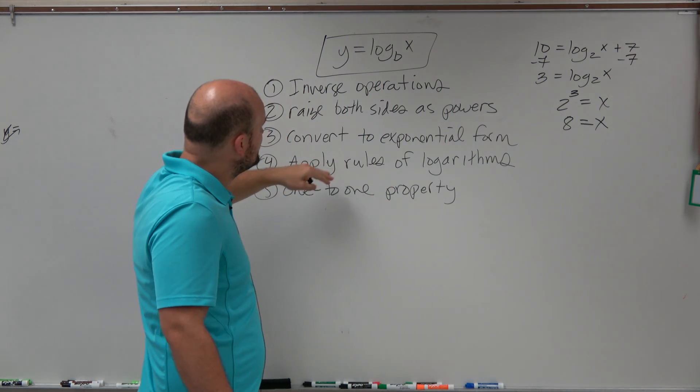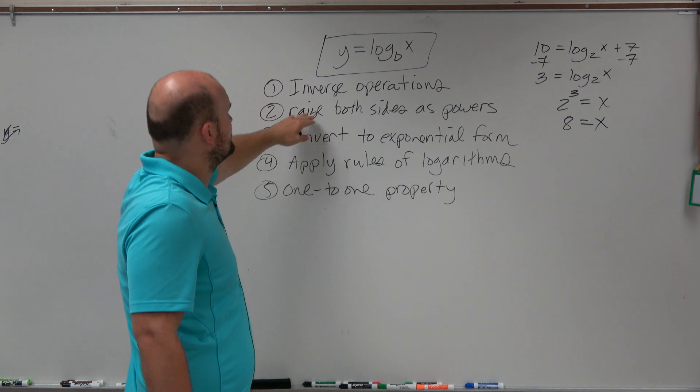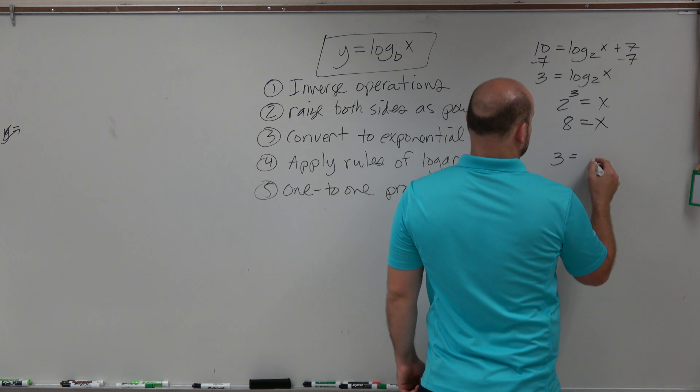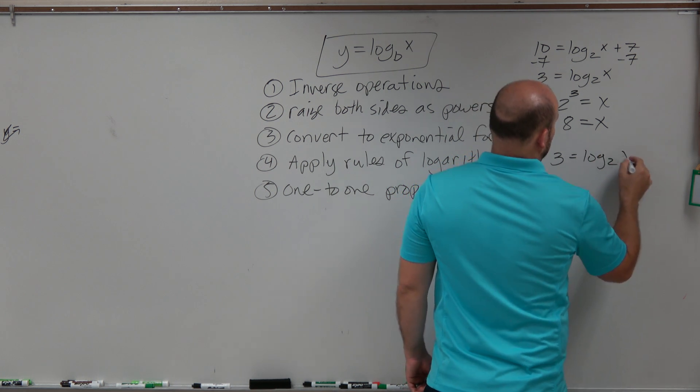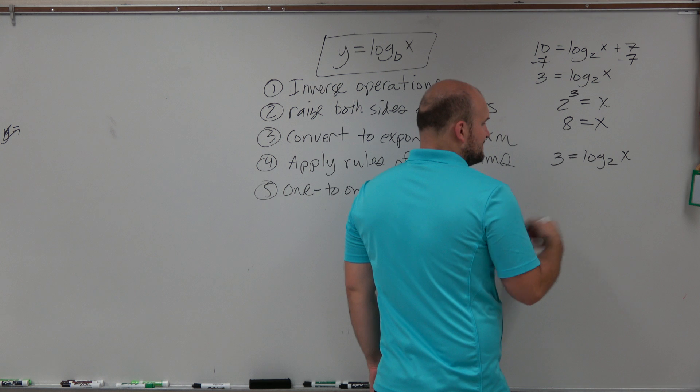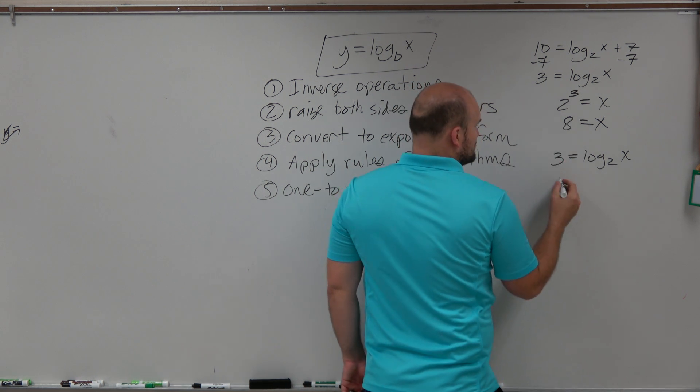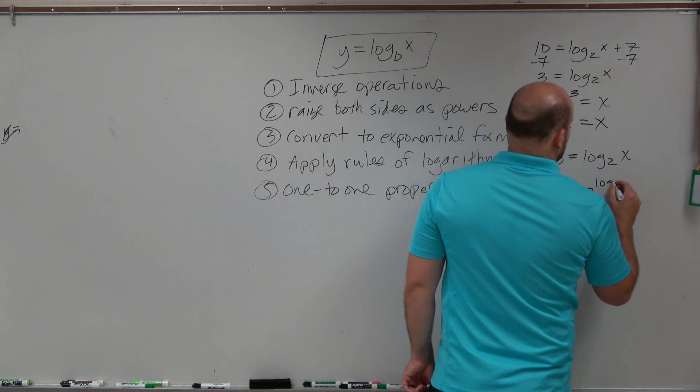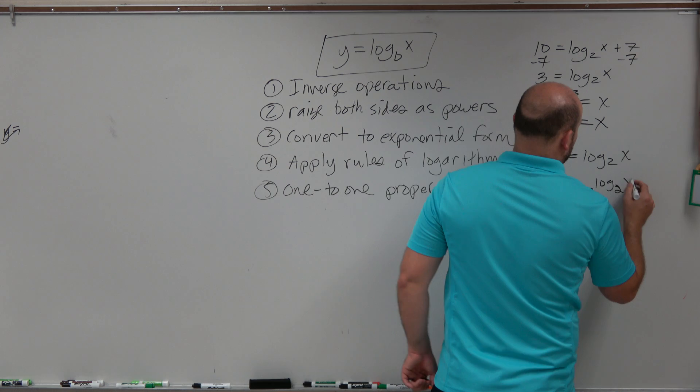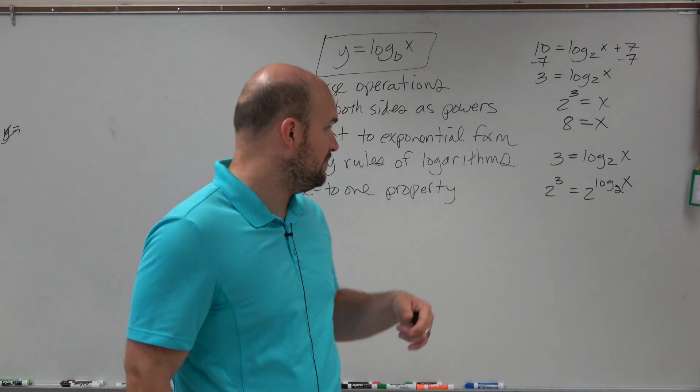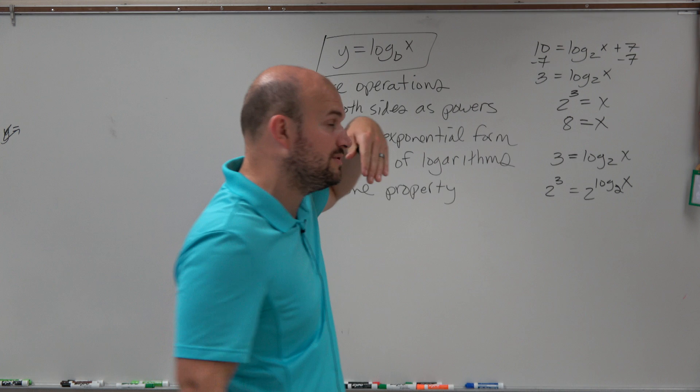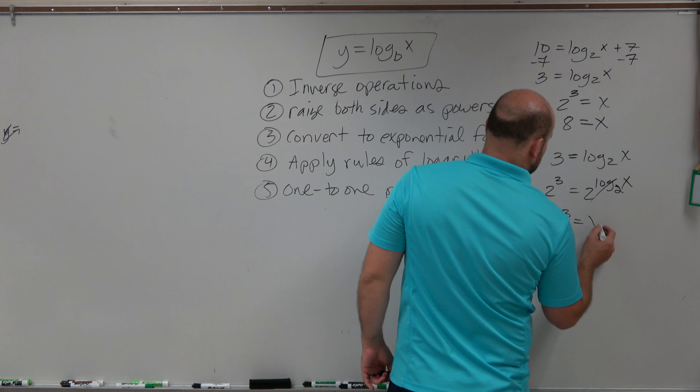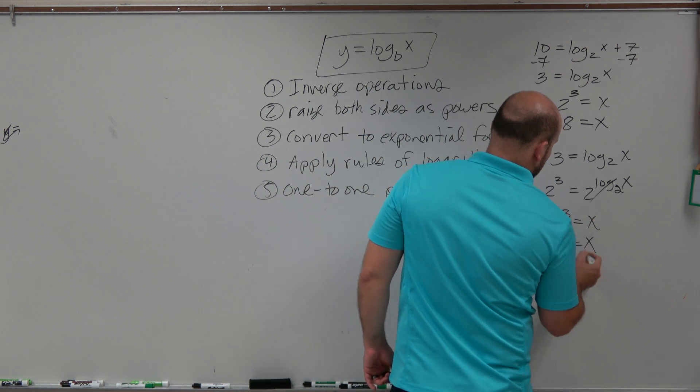Another way is to apply the rules as powers. So what we could do is say 3 equals log base 2 of x. And here, using the rules of exponents, I can raise them as both powers. So if I raise them as base 2, I have 2 to the third power equals 2 to the log base 2 of x. And if you remember your rules of logarithms, when we have 2 raised to log base 2 as an exponent of x, then we're just left with 2 to the third power equals x, which we again know is going to be 8.